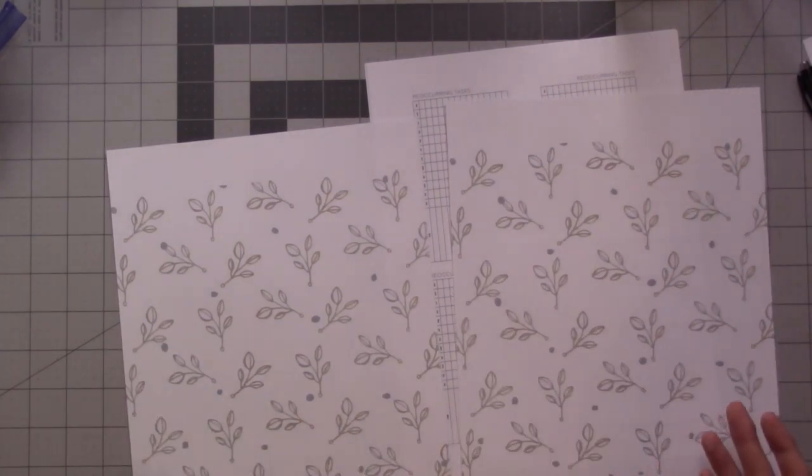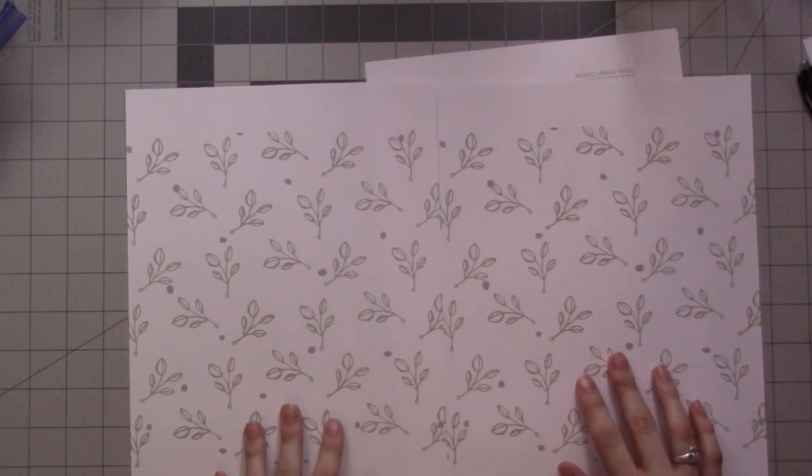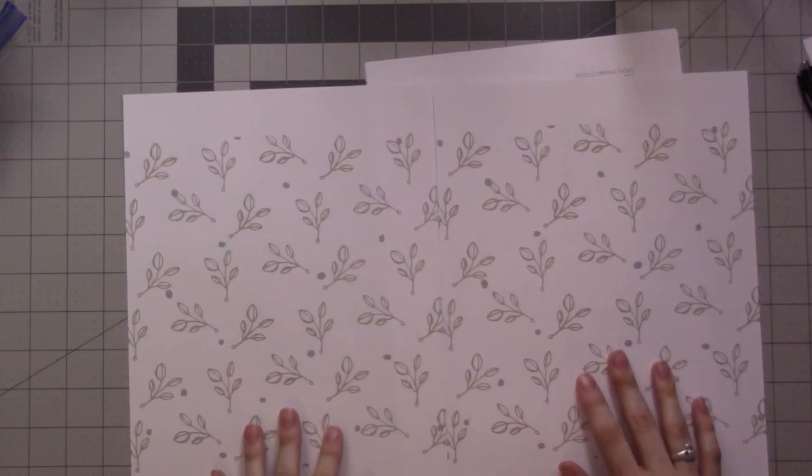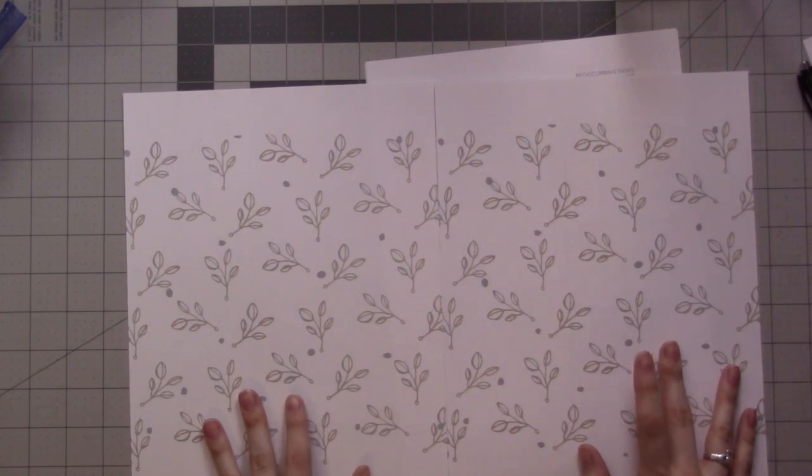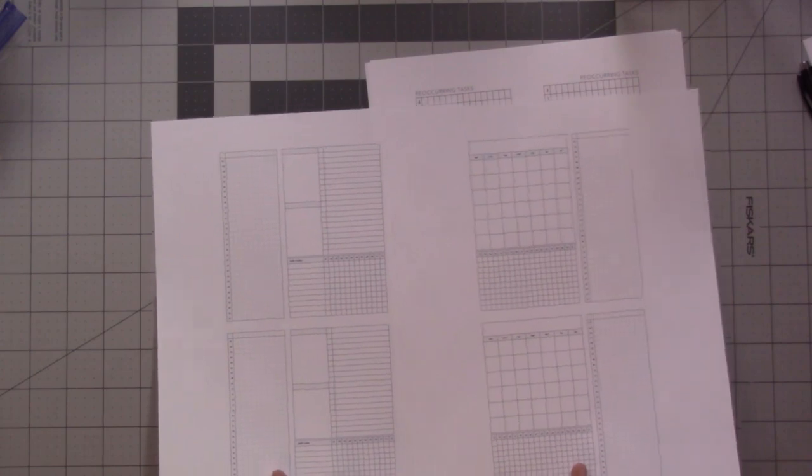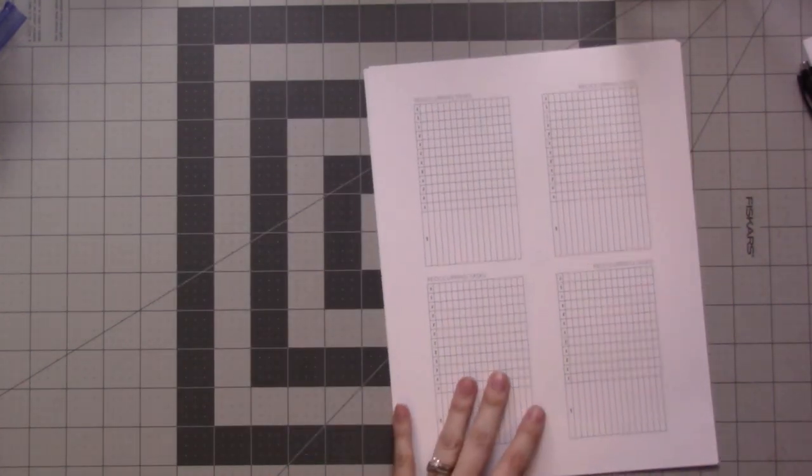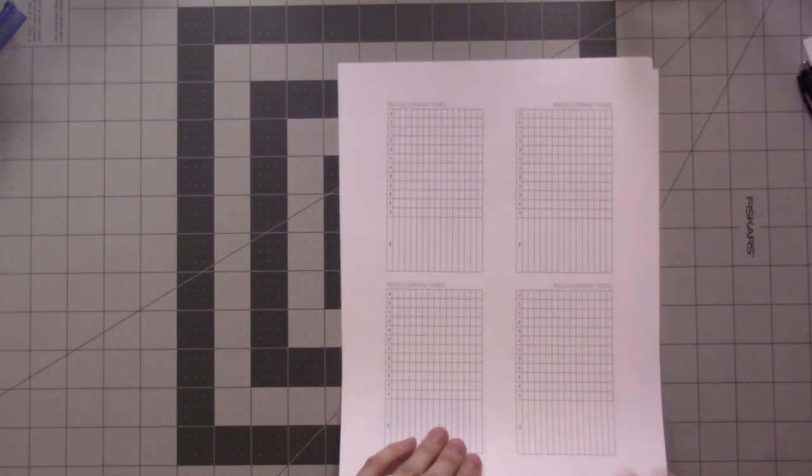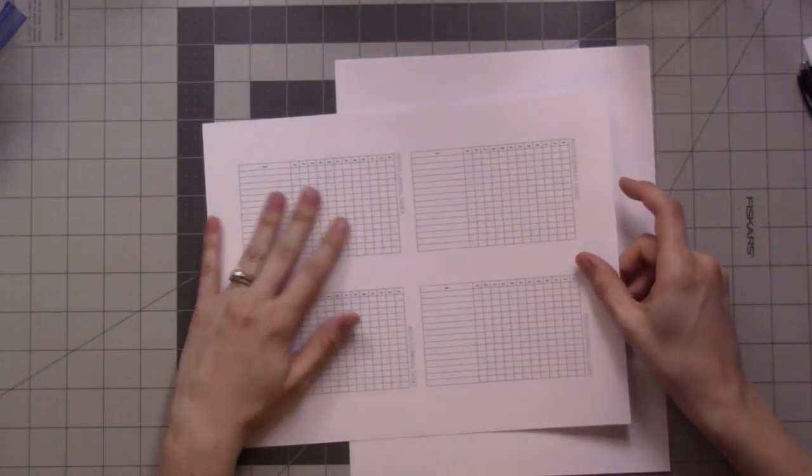So on the back of these I just printed some really simple digital scrapbook paper that I literally just googled digital scrapbook paper and this was on the first page that popped up. I will try to remember to link it below if I find it again. But I just needed something simple to go in the back so that it's not just a blank piece of white paper. So there you go, that is the monthly month on two pages, number 103.